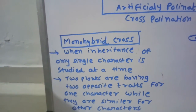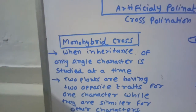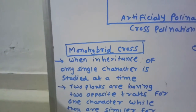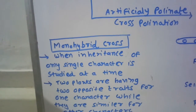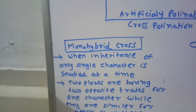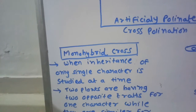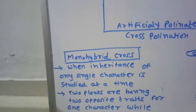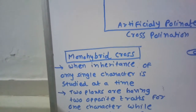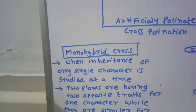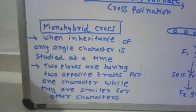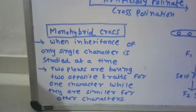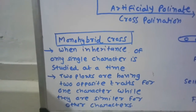अगर इसको simple language में समझें तो उस hybridization experiment को monohybrid cross कहते हैं जिसमें एकी character का inheritance एक time पे study किया जाता है। दूसरे characters जैसे seed shape, flower color उनके inheritance को उस time पे ignore किया जाता है। जिस भी hybridization में सिर्फ एकी character का inheritance एक time पे study होता है उसको monohybrid cross बोलते हैं।